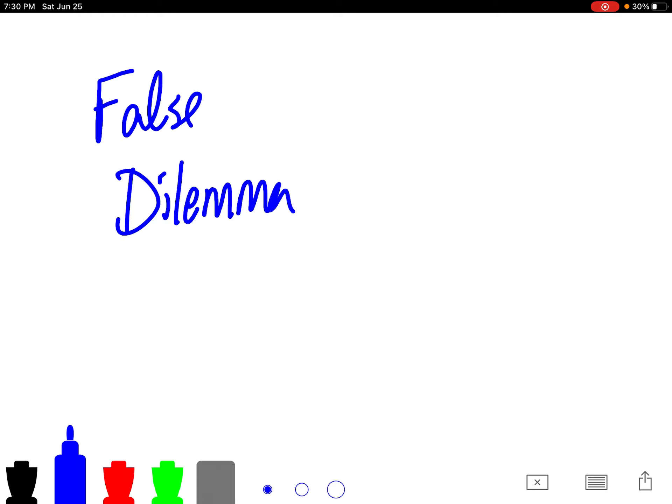So, there's an argument form that we learned that we call a disjunctive syllogism, and you probably recall that it follows this argument form: either A or B, not A, so B.